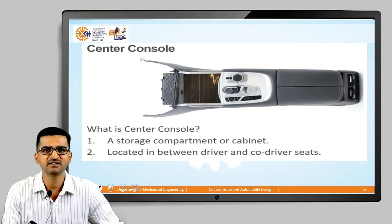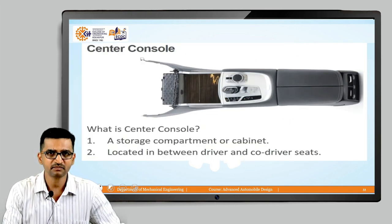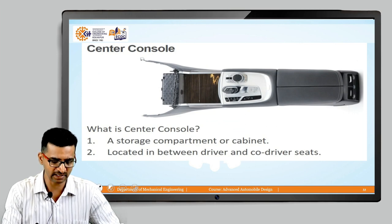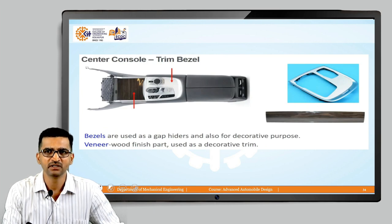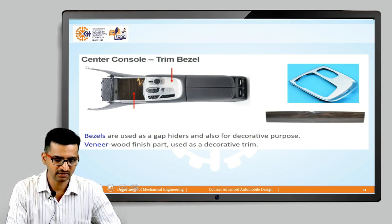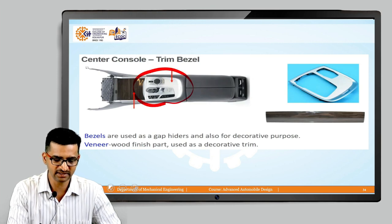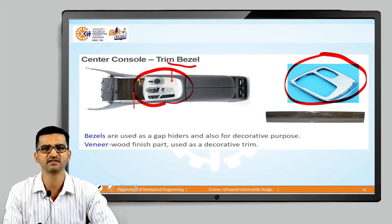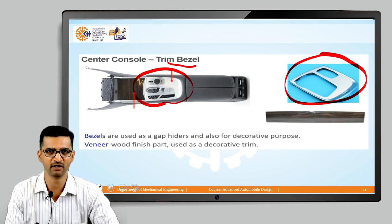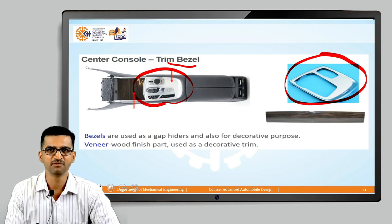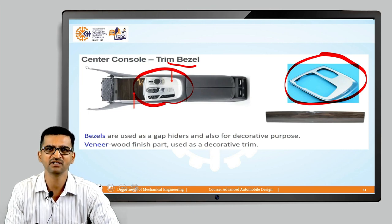The central console is a storage compartment located between the driver and co-driver seats. The central console trim bezel is an aesthetic member whose function is to improve the aesthetic appeal of the central console. It is normally chrome-plated or veneer-plated. In modern and luxury cars this is commonly provided, whereas in entry-level cars the trim bezel may not be present.